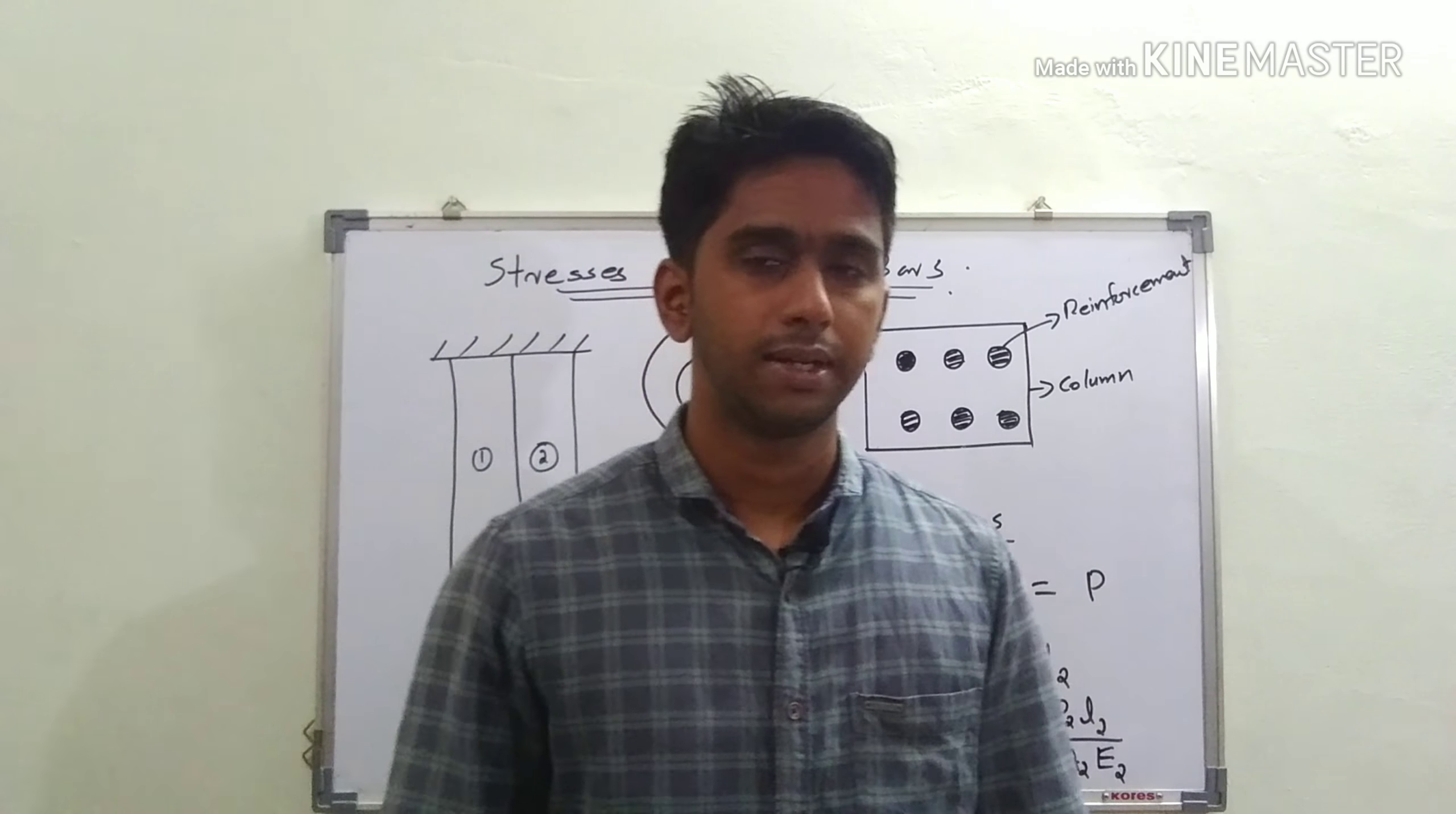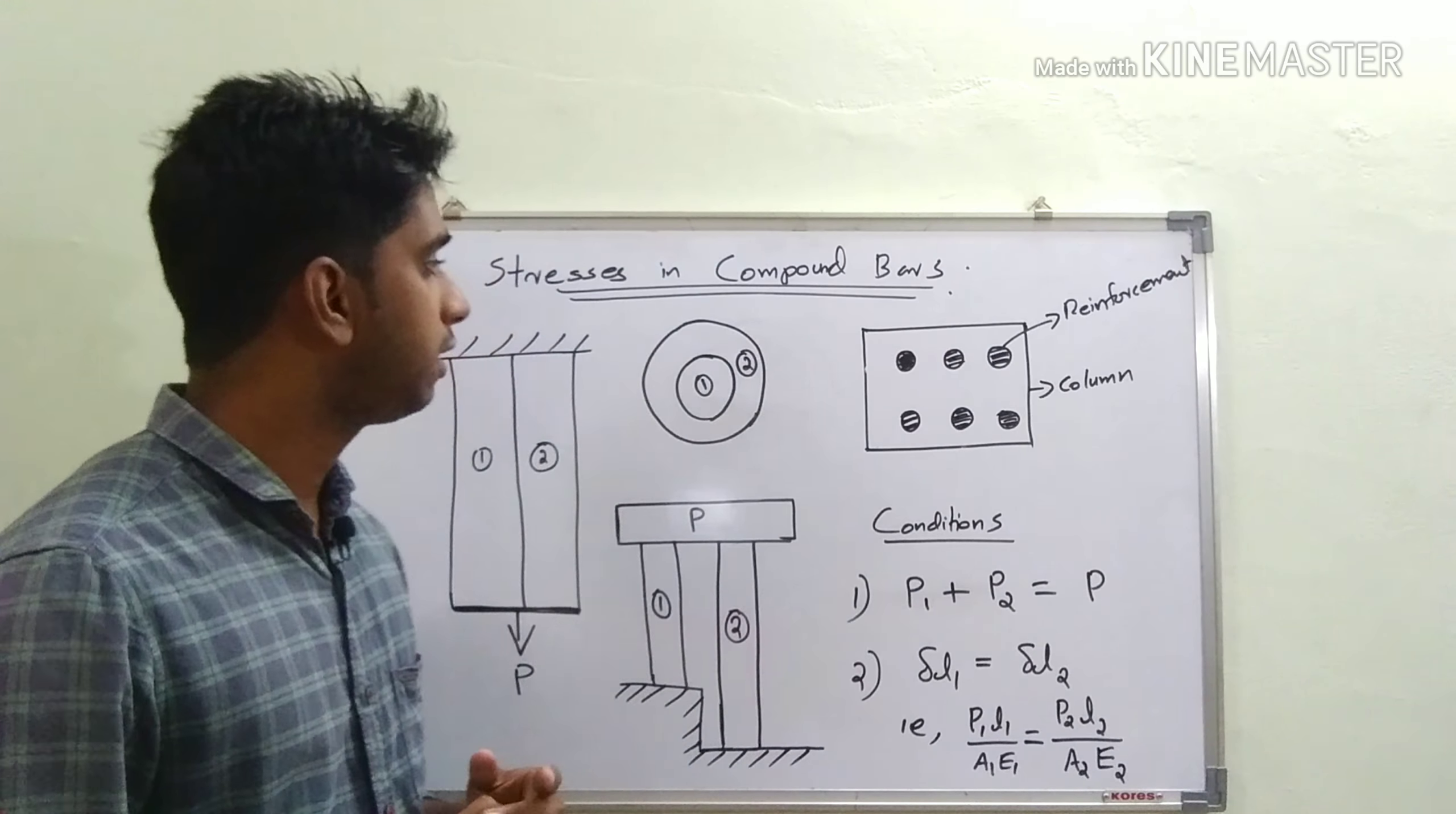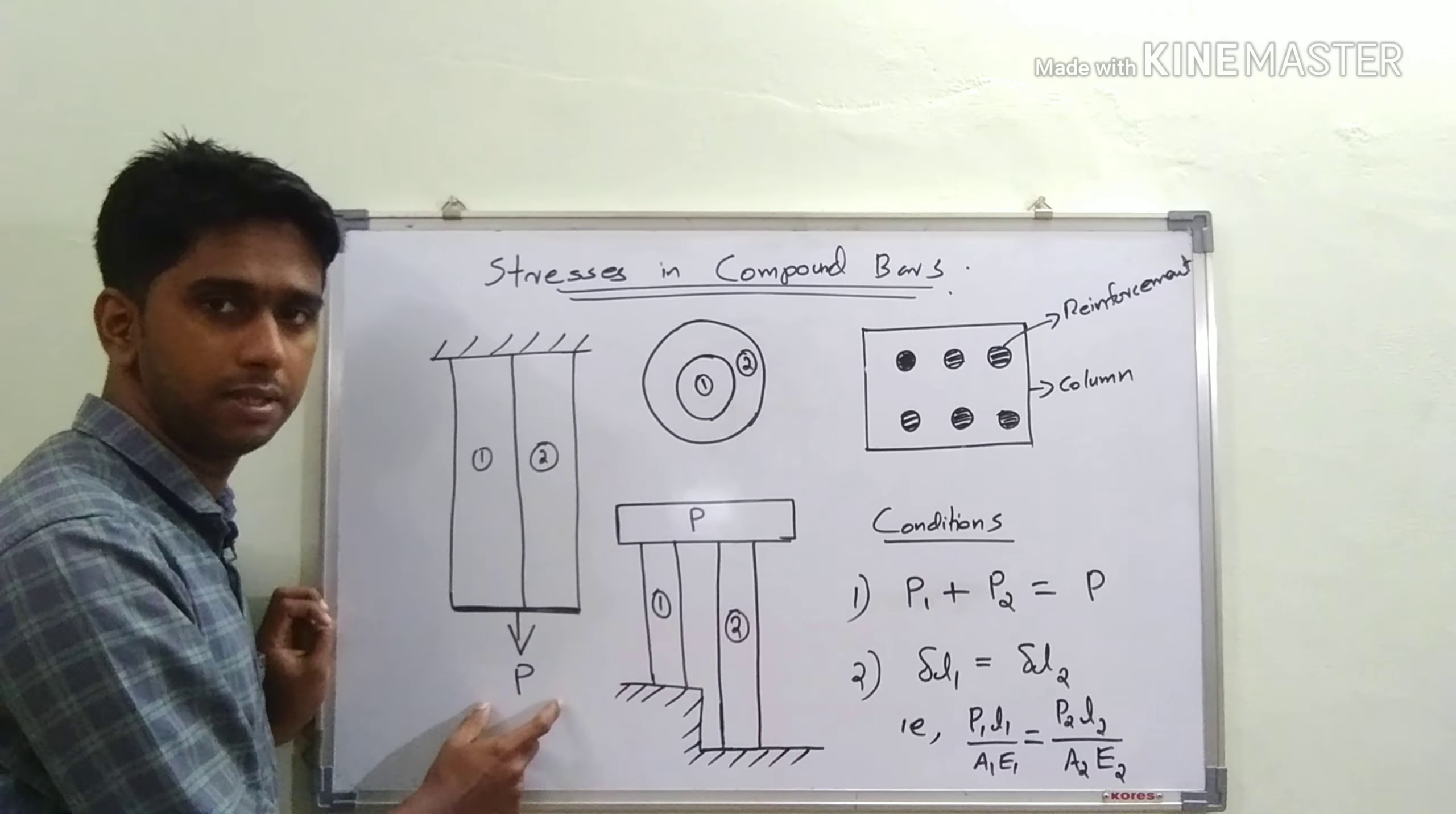We need two sets of conditions to solve a problem from composite bars. One is an equilibrium equation, and the second is a compatibility equation. The equilibrium equation states that the total load acting in a composite bar is the sum of the individual loads shared by each material. If the total load is P, then P = P₁ + P₂.